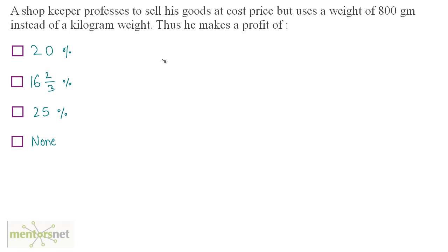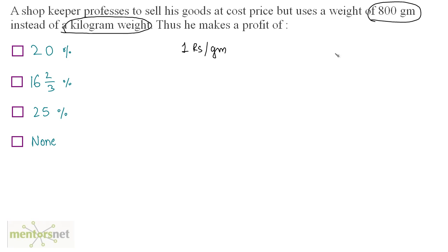A shopkeeper professes to sell his goods at cost price but uses a weight of 800 grams instead of a kilogram weight. Thus, he makes a profit of how much? Let us assume that the cost at which this shopkeeper buys his goods is 1 rupee per gram. He sells using what he claims is a kilogram weight, but it is actually an 800-gram weight. So his selling price is based on 1 rupee per gram.